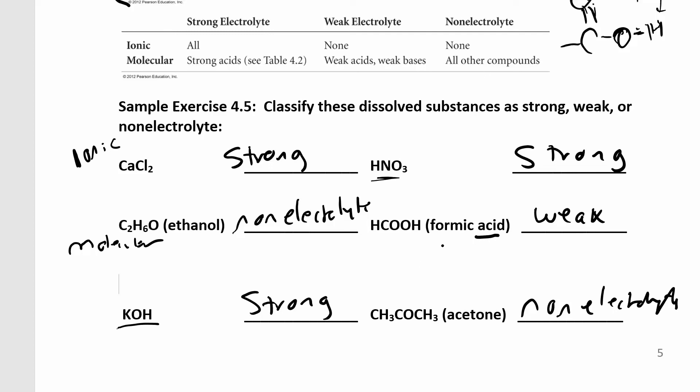And here is formic acid. They tell you it's an acid. It's not on the list of strong things, so it must be a weak acid, so it's a weak electrolyte. Potassium hydroxide is a strong base, so it's a strong electrolyte. And acetone is a molecular compound that's not an acid or base, a weak acid or base, or strong acid.